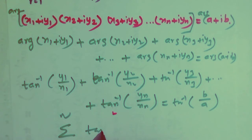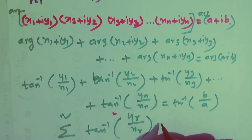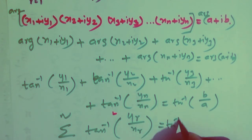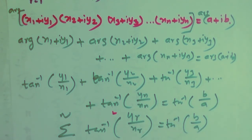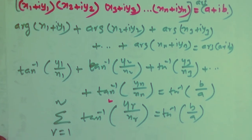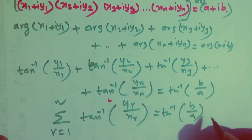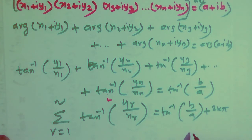So tan⁻¹(y1/x1) + ... + tan⁻¹(yn/xn) equals tan⁻¹(b/a). This is the principal value. For the general value, we add 2kπ, where k belongs to Z. This completes the second proof.